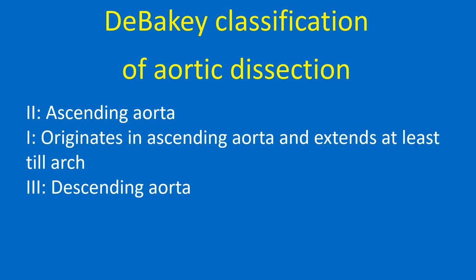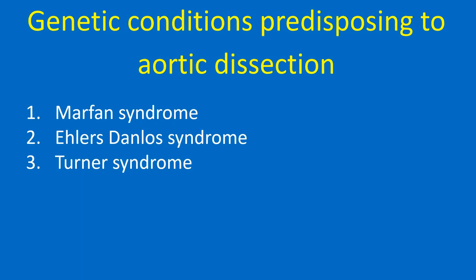DeBakey classification of aortic dissection: Type 1 originates in ascending aorta and extends at least to the arch. Type 2: ascending aorta only. Type 3: descending aorta.